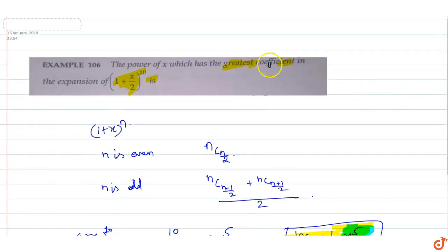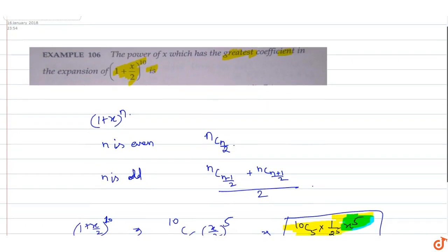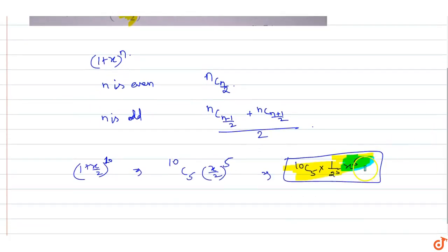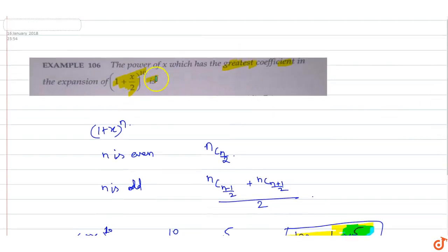Therefore, the power of x which has the greatest coefficient in the expansion of (1 + x/2) raised to power 10 is 5. The power of x is 5.